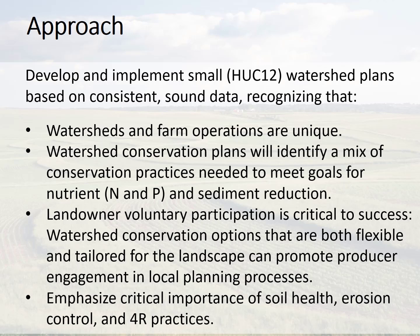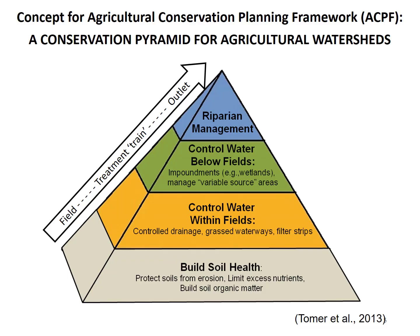The ACPF also emphasizes the critical linkage between soil and water resources and embraces practices that improve soil health, control soil erosion, and manage agricultural inputs to optimize their efficiency of use. This conservation pyramid embodies the conceptual approach of the ACPF. Building soil health is the foundation, and practices that minimize soil erosion, manage nutrients efficiently, and increase soil organic matter are fundamental to successful management of agricultural watersheds. The ACPF does not target these practices to particular fields because any farmer should have access to USDA conservation programs aimed to enhance soil productivity and increase agricultural efficiency.